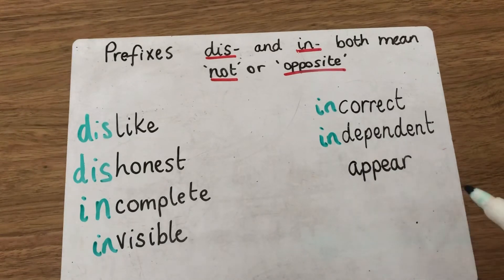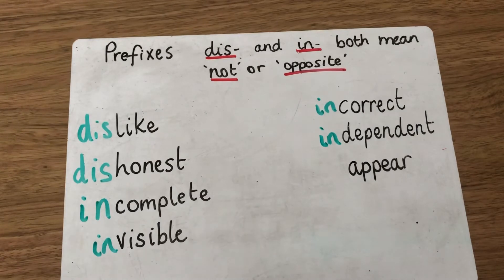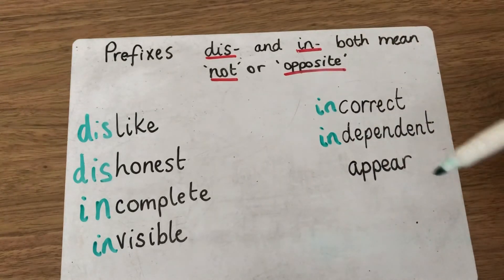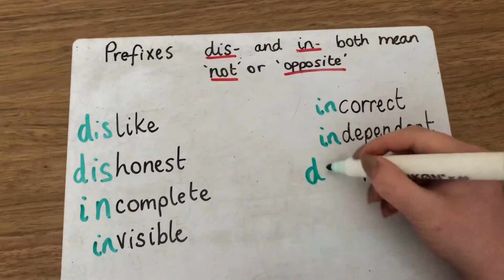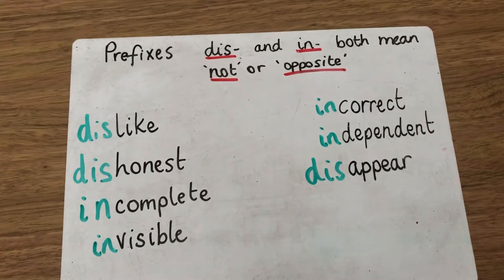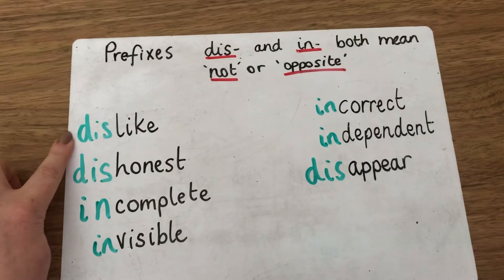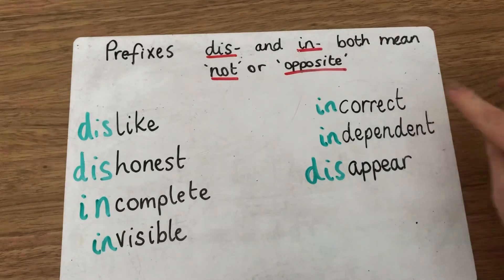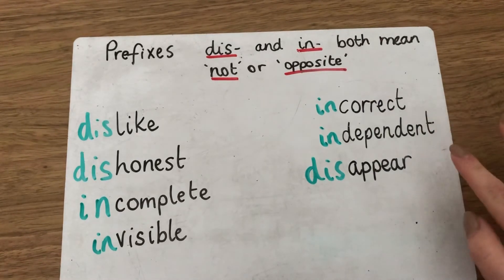So the last one is 'appear'. We said that's when things show themselves to us, we can see them. So is it 'disappear' or 'inappear'? Well done — it was 'disappear'. When something disappears, it means it vanishes, it goes away, it's not there anymore. So 'appear' — you can see it shows itself; 'disappear' — it goes away, it's vanished. So we've got: dislike, dishonest, incomplete, invisible, incorrect, independent, and disappear.